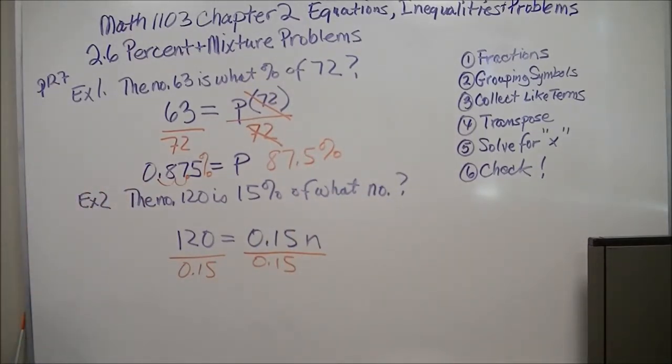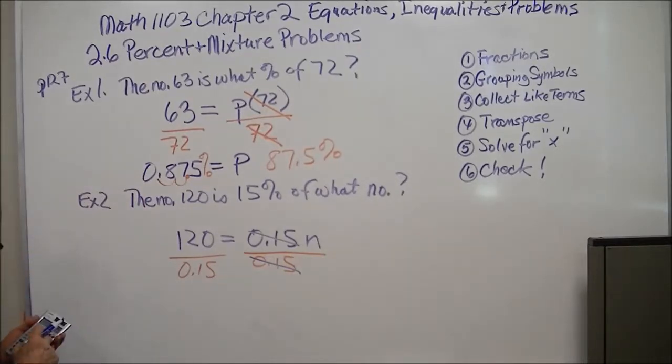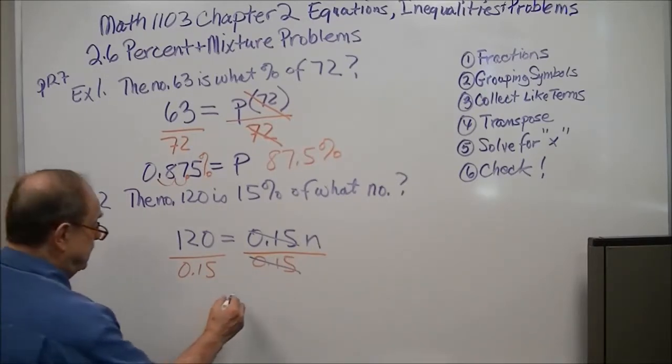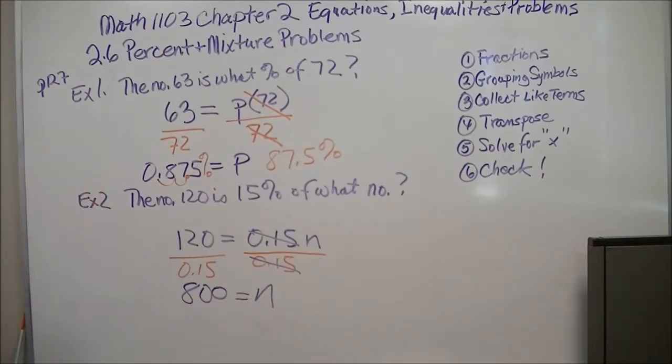Now for this next one, we're going to divide both sides by .15. So in my calculator, I put 120 divided by .15, and I get 800. So what is the number? 800.